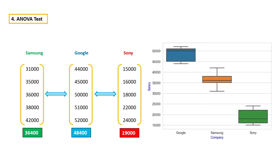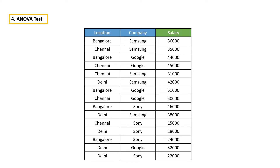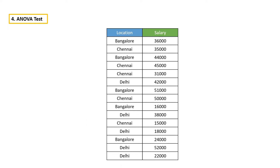As you can see, Google employees are getting more salary than Samsung and Sony, which means company makes a huge difference in salary. So, this feature is important. Now let me show you another example. This time, let's focus on location.